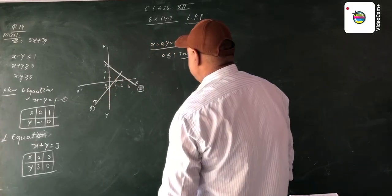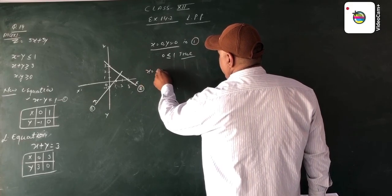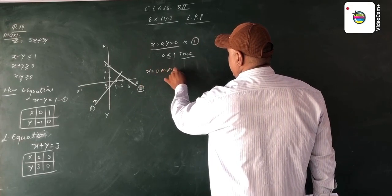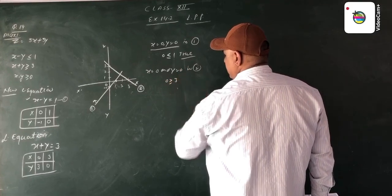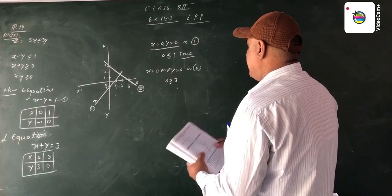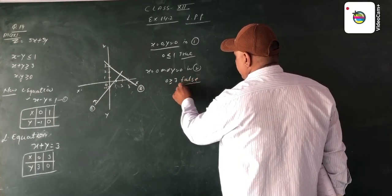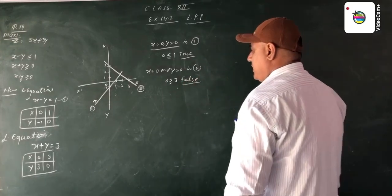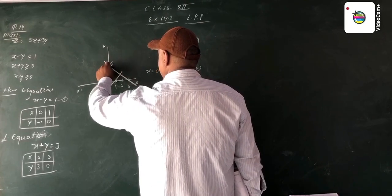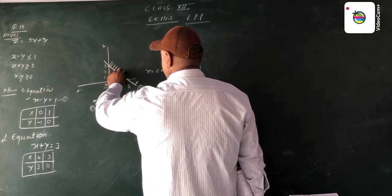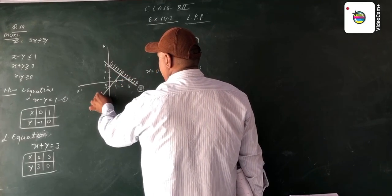Now in equation second, if we put x equal to 0 and y equal to 0, we get 0 is greater than or equal to 3. This is a false statement. The false statement says that the area becomes opposite to the origin. So the second equation's region is opposite to the origin.